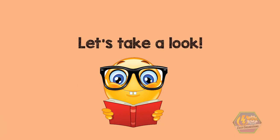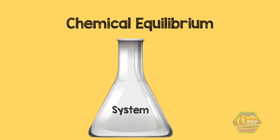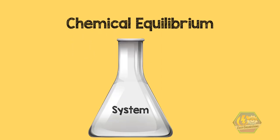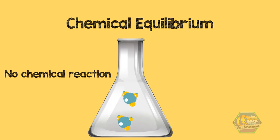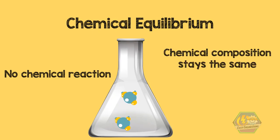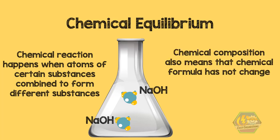Let's discuss these three requirements one by one. The first one is chemical equilibrium. For a system to be in chemical equilibrium, there must be no chemical reaction happening within the system and its chemical composition stays the same. Chemical reaction happens when atoms of certain substances combine to form different substances, and the chemical formula will not be changed.